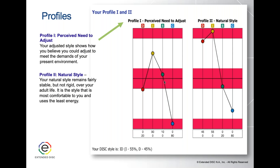Everyone has two profile graphs. Profile 1 on the left is your adjusted style — it shows how you believe you need to adjust to meet the demands of your present environment. It always needs to be read in comparison to your natural, hardwired Profile 2, which is your most comfortable way of doing things — think of it as the starting point from which adjustments are made. When you interpret Profile 1, it has no meaning without comparing it to Profile 2.